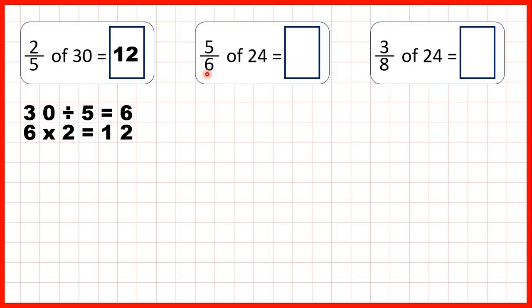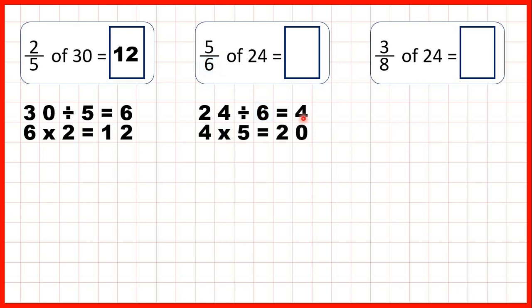Now we need to find 5 sixths of 24. So we can start by dividing 24 by 6, so divide denominator. That gives us 4, because 4 times 6 is 24. But then we need to take that 4 and times top, so multiply by the numerator. 4 times 5 is 20, so that's our answer.